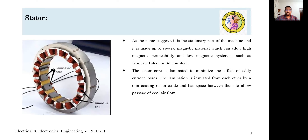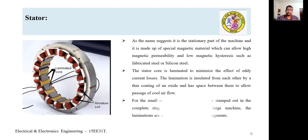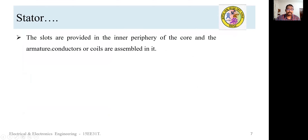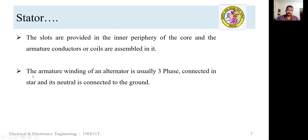The laminated thin sheets avoid loss due to eddy current. The slots are provided in the inner periphery of the core and the armature conductors are assembled in them. The armature winding of an alternator is usually a three-phase winding connected in star, and its neutral is connected to the ground.